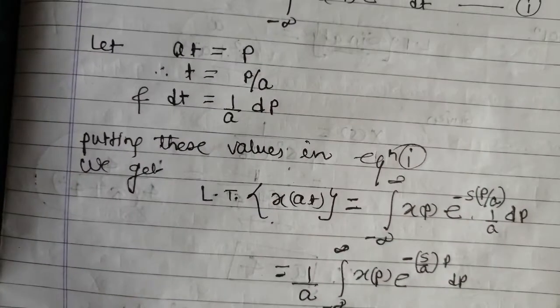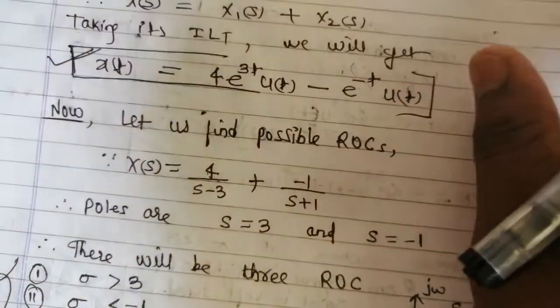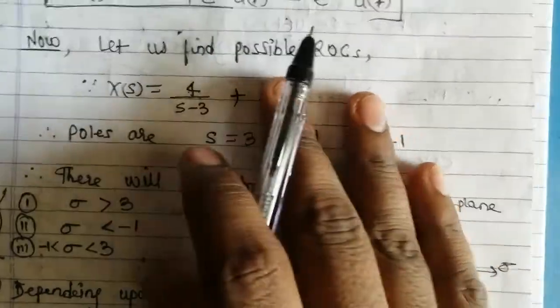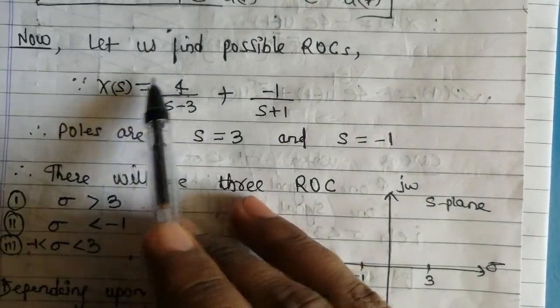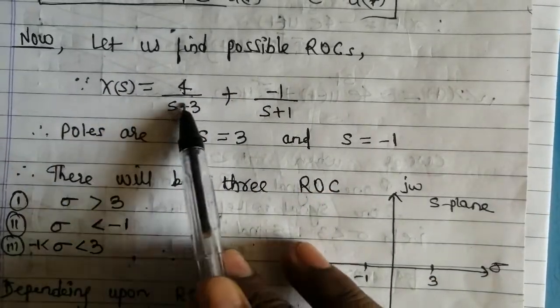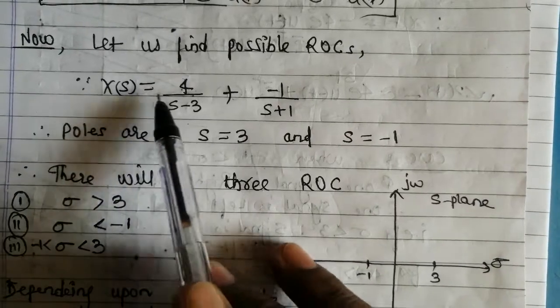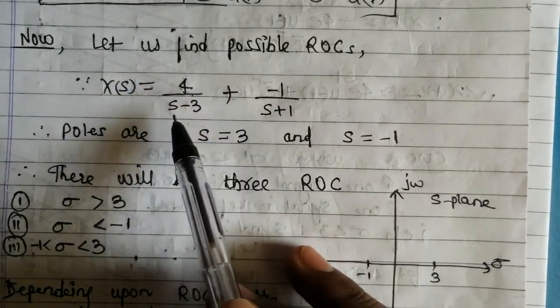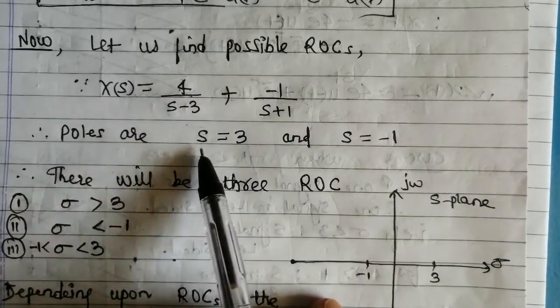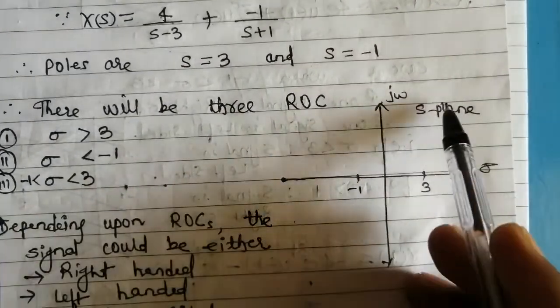The question asks us to find all possible ROCs. Let's discuss how many possible ROCs there are. From the result X(s) = 4/(s-3) - 1/(s+1), the denominators give us the poles. The poles are at s=3 and s=-1. I have drawn an S-plane and placed these roots on it: s=3 on the right side and s=-1 on the left side of the sigma axis.